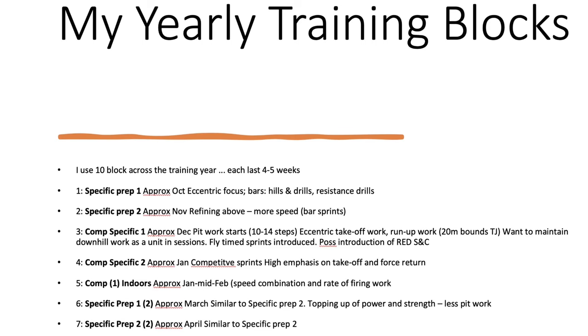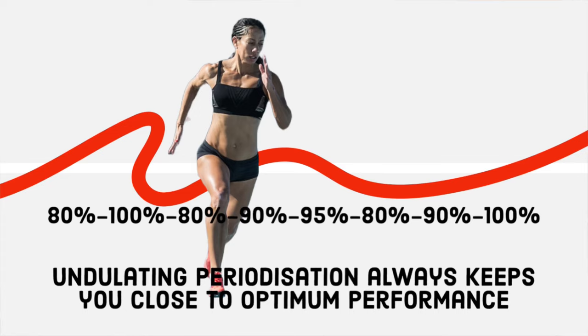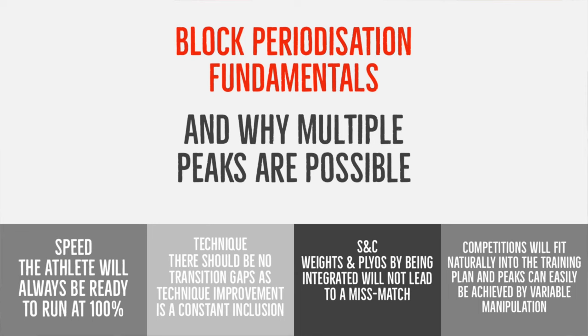For the specific preparation phase in October — block 1 — the focus is eccentric work: downhill steps, downhill sprints, bar drills, resisted work, hills and drills. I'm constantly trying to elevate the performance potential of sprinters and jumpers across these 10 blocks. Block 5 is the first peak — the indoor season — and blocks 9 and 10 are peaks in the outdoor season. With undulating periodization you can maintain peaks better across the year than with traditional periodization, where you might only have a six-week window for peaking.